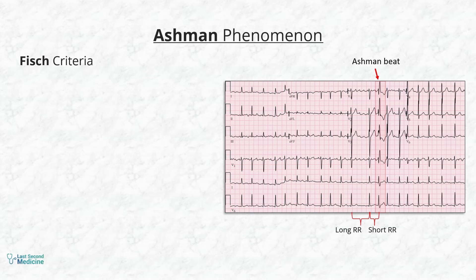FISH criteria is used for the diagnosis of Ashman Phenomenon. It includes these five points.